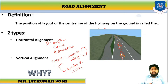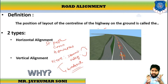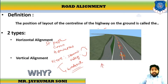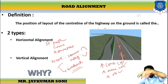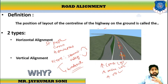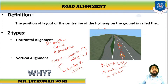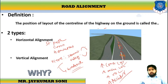Whenever we learn a new topic, we learn what, why, and then how. We have learned what Road Alignment is and its types. Now we learn why it is required. If alignment is not placed adequately, it will increase construction cost, maintenance cost, vehicle operation cost, and also increase the accident rate.